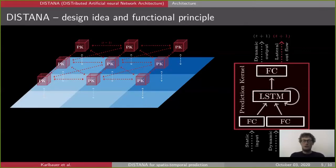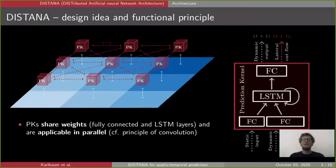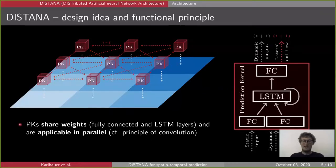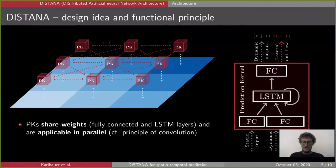A crucial ingredient of this architecture is that all prediction kernels share weights — meaning there is only one prediction kernel, which is applied in parallel at every position in the two-dimensional grid. This principle of shared weights is inspired by the convolutional principle, where a filter is applied over the entire image in parallel, which dramatically reduces the number of parameters, reduces required training examples, and significantly increases learning speed.